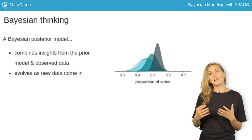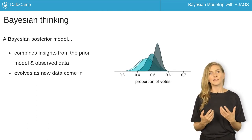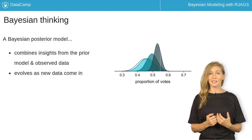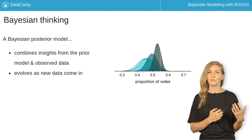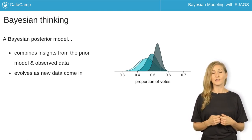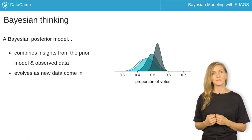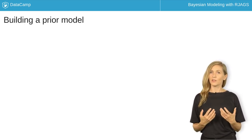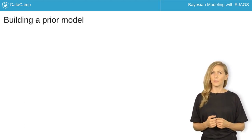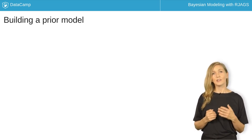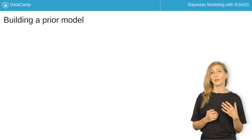This election example highlights the power of Bayesian models. Not only does a Bayesian posterior model combine insights from the prior model and observed data, it continues to evolve as new data come in. In chapter one, you'll explore the three fundamental pieces of Bayesian models: the prior, likelihood, and posterior.